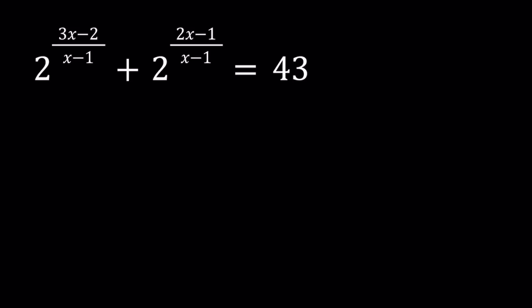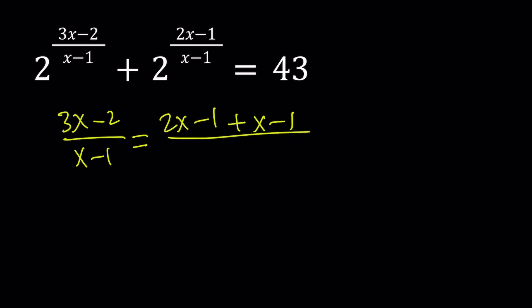Let's start by breaking down (3x minus 2) over (x minus 1). Notice that between the two exponents there is actually a relationship which is going to help us solve the problem. We're going to write (3x minus 2) over (x minus 1) as (2x minus 1) plus (x minus 1), all over (x minus 1).